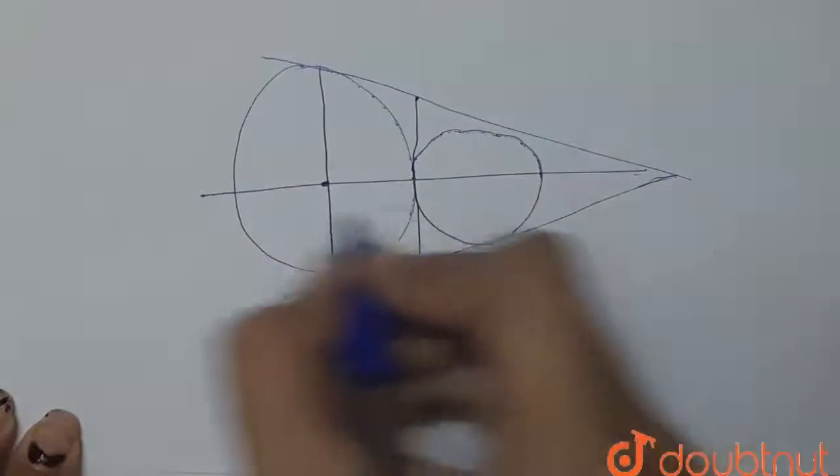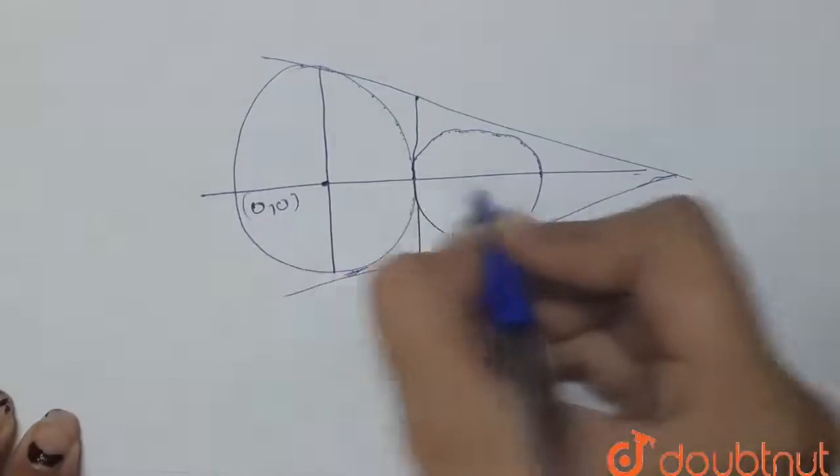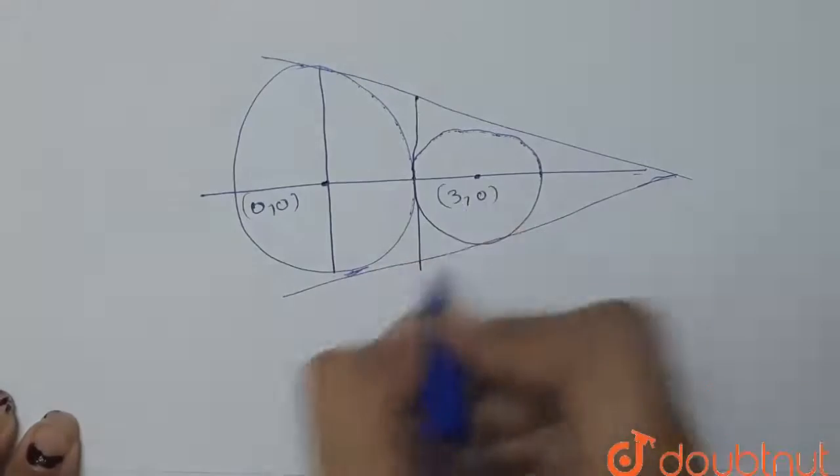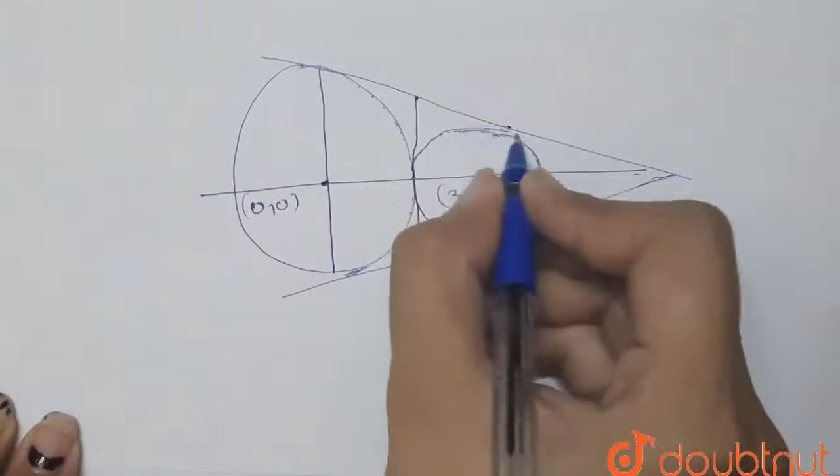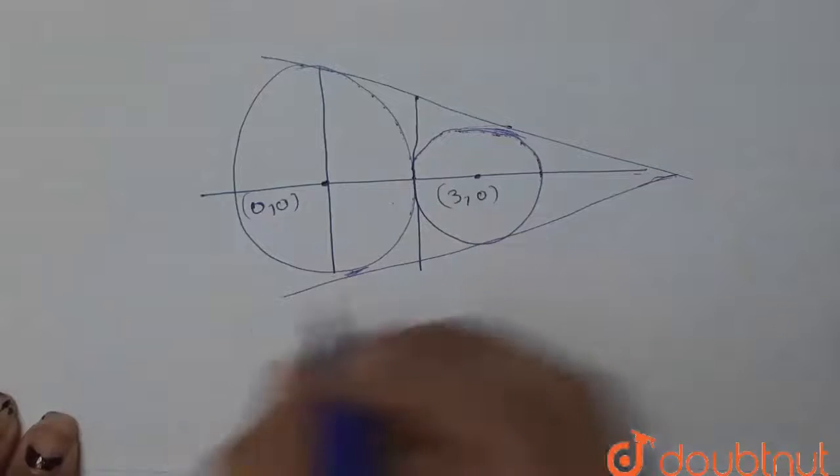Now its center will be (0, 0) and its center will be (3, 0). How we got it, I'm going to explain it right now. See, if we talk about the standard equation of the circle...